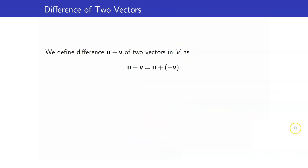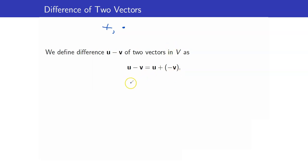Now we can define the difference of two vectors. Note that the only two operations in a vector space are vector addition and scalar multiplication. However, we can define subtraction: the difference of two vectors u minus v is defined as u plus the additive inverse of v. This is the same as with real numbers, where a minus b is defined as a plus negative b.